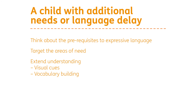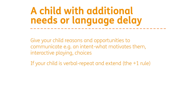We need to extend their understanding if that's an area of need — we've talked about supporting with visual cues, whether that's pointing and using gestures or showing them the object. We need to build on their vocabulary — once they understand what objects are and can understand our cues, we need to start teaching them the names of things in lots of different ways. Give your child reasons and opportunities to communicate, think about what motivates them, think about interactive playing, follow their lead, and watch what they're choosing to do. Build communication opportunities in — if they need some help with something, sit back a little and wait for that initiation so they can see there's a reason to communicate.